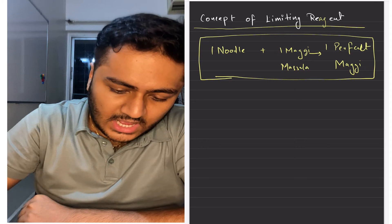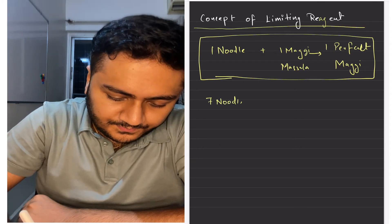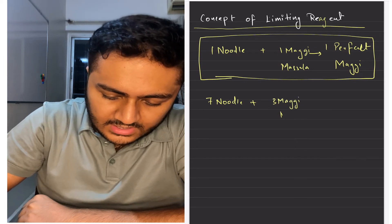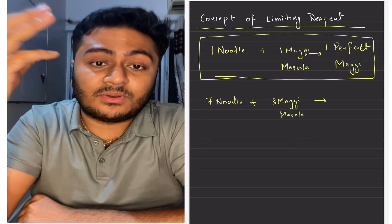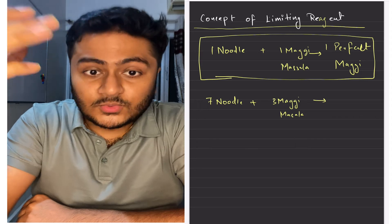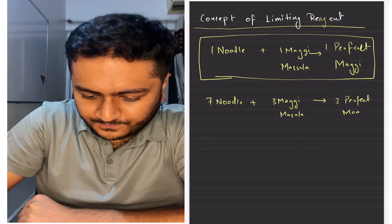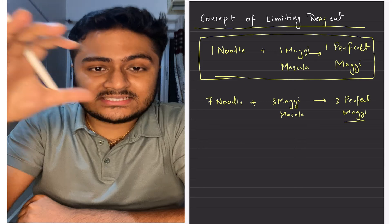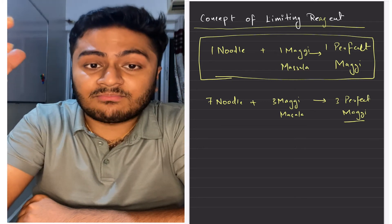Now let's say they gave you seven noodles and three maggie masalas, and they ask you how many perfect maggies can be prepared using these two ingredients. You will say obviously three perfect maggies can be made.